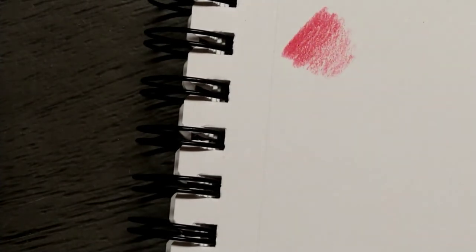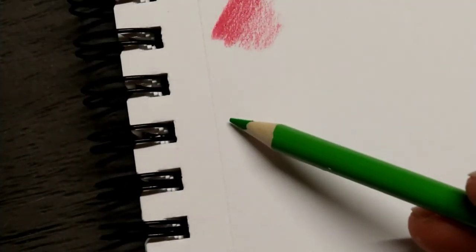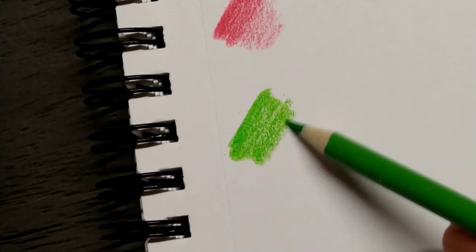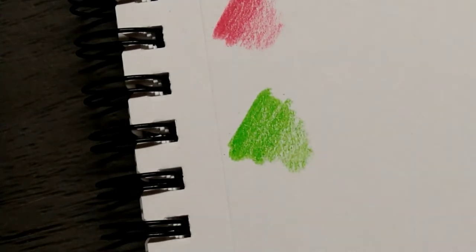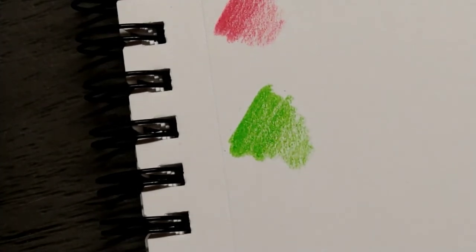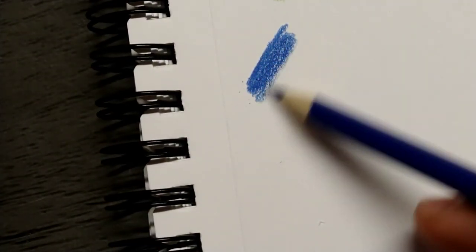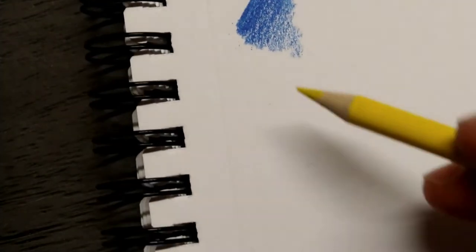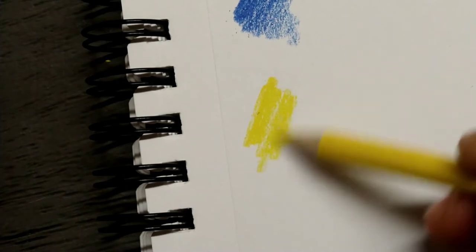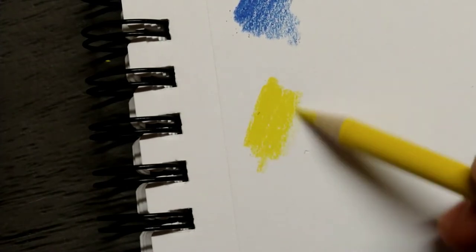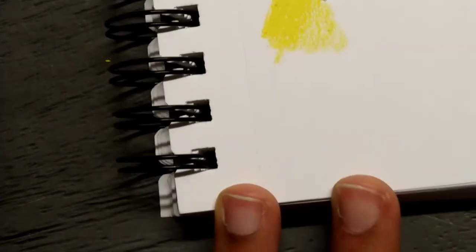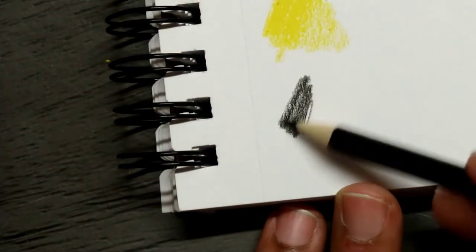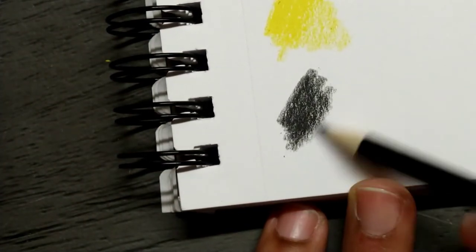Some colors swatch better than others. Particularly the yellow, it just goes on like butter. The green is pretty okay too. But some colors just glide on better than others. I will say that the black is not as black as it should be. It's not that pigmented, so you're going to have to look elsewhere for a black, maybe a black marker or something to make up for the lack in the black that's in this set.